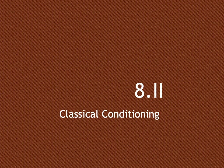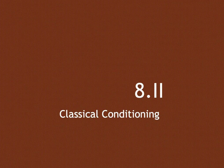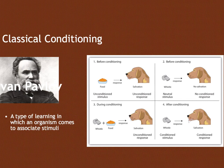In classical conditioning, associative learning is when we associate one stimulus with another stimulus. The man best associated with classical conditioning is the man pictured here, Ivan Pavlov, who is a biologist. Classical conditioning is a type of associative learning in which an organism comes to associate two stimuli.